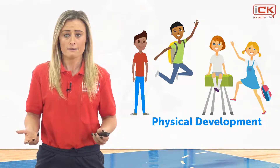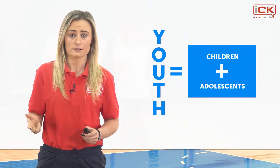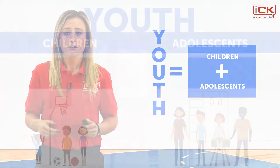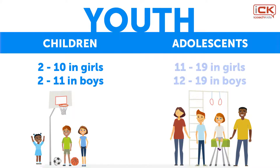Before we start, some key terms that are important to understand include what we mean by the terms youth, children, and adolescents. By children, we mean 2 to 10 years of age in girls and 2 to 11 years in boys. By adolescence, we mean the period from approximately 11 to 19 in girls and 12 to 19 in boys. And finally, by youth, we mean children and adolescents.